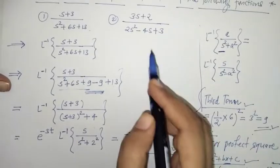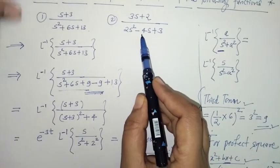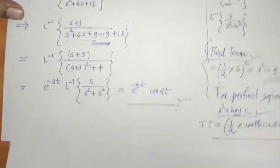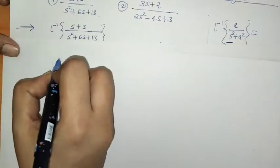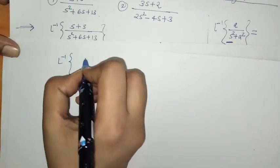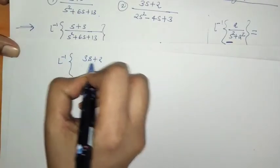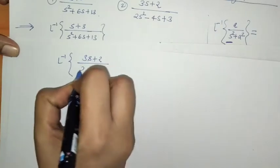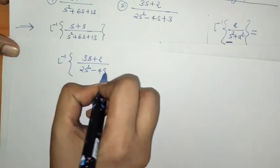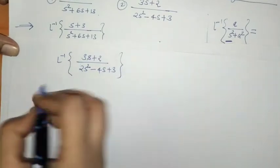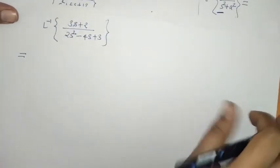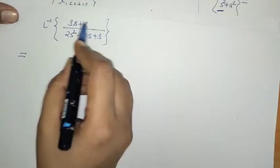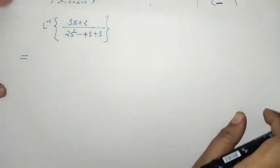In the same manner, we have to find the inverse Laplace transform for the second function. Here we take L-inverse of (3s + 2) upon (2s² − 4s + 3). Again, in the denominator we have a quadratic factor.